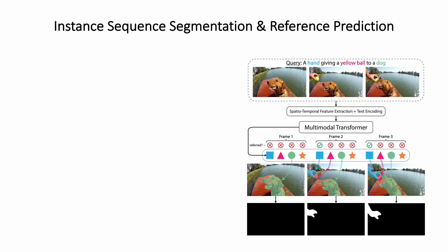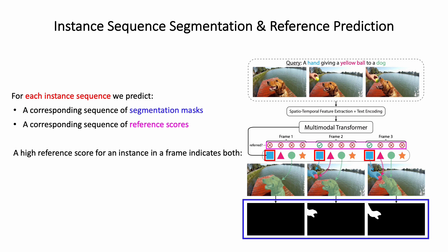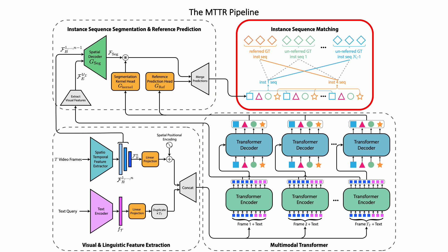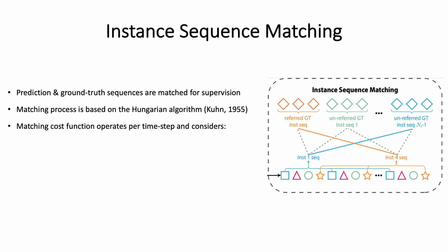In step 3, for each instance sequence, we predict a corresponding sequence of segmentation masks and a corresponding sequence of reference scores. A high reference score for an instance in a frame indicates both a strong text correlation and the visibility of that instance in the frame. In step 4, during training, the predicted sequences are matched with the ground truth sequences for supervision. The matching process is based on the Hungarian algorithm, while the matching cost function operates per time step and considers both reference and mask compatibility.